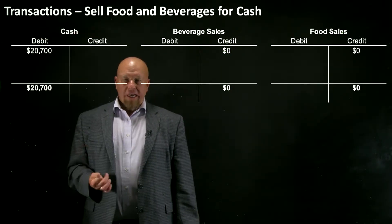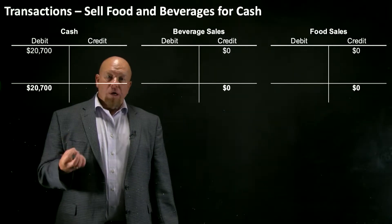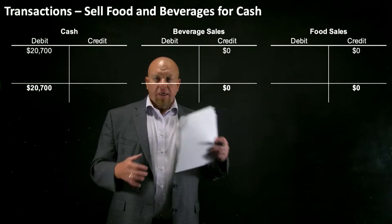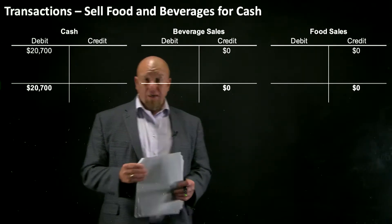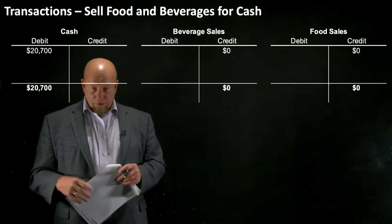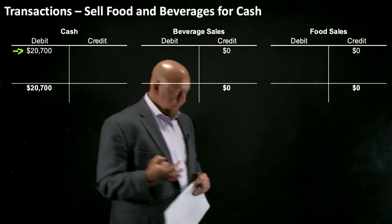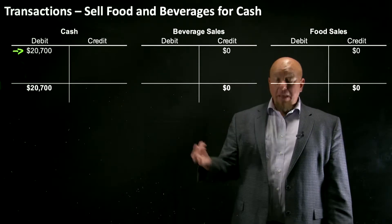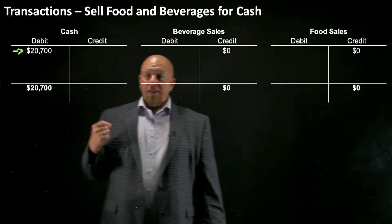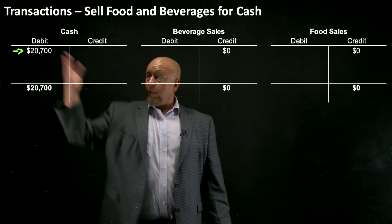Let's record some income statement transactions for Blake's Coffeehouse. January was its initial month of opening for business — we formed the business, bought the equipment, got everything ready — but we didn't touch anything involving the income statement in January. Now we're looking at February where we can actually start some of our operations. Some T-accounts have preloaded beginning balances — that's because in those balance sheet transaction videos, we ended with a cash balance of $20,700. If you end January with $20,700, you start February with $20,700.